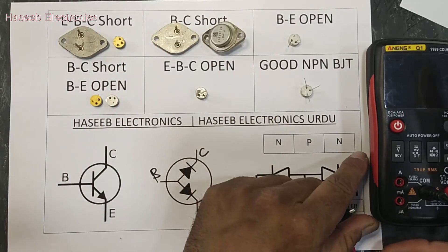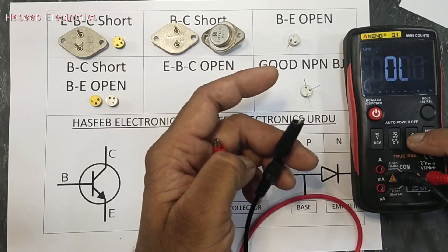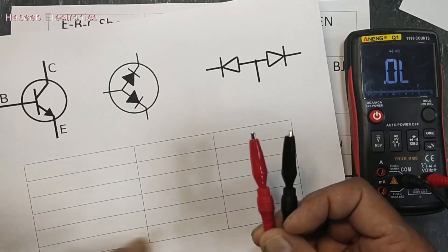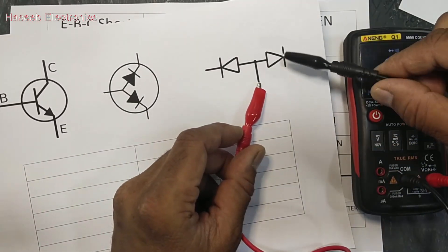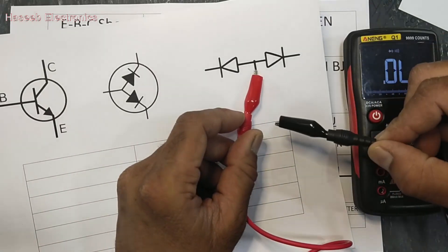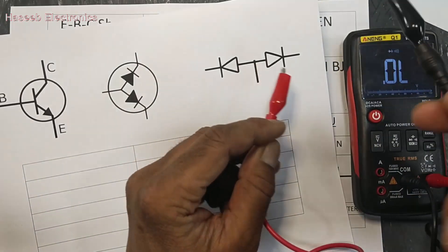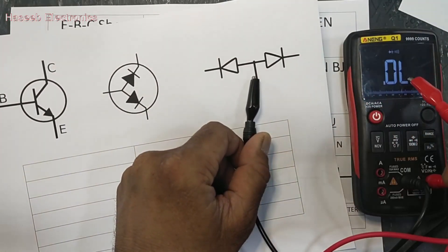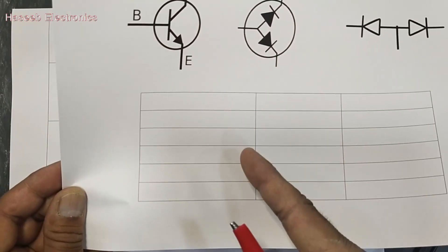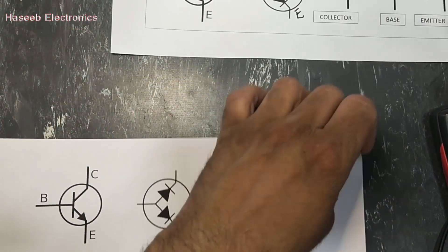To test a transistor we need a multimeter — an ohmmeter or any multimeter which has a diode function. Set the multimeter to test diode; it will display the diode symbol. To test a diode, connect the red positive lead to the anode and the black lead to the cathode. The diode will be forward biased and we will see 0.7 volts. If we reverse the leads it will show open circuit. We will use the same procedure with the transistor and fill out a table to understand the test procedure, then continue to the failures.